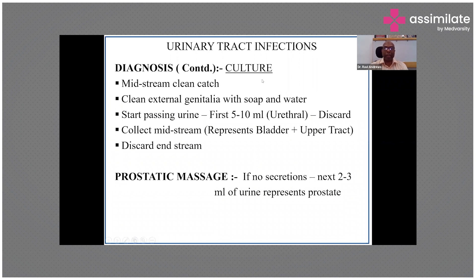If suprapubic or catheter collection isn't available, a midstream clean catch is used. In males, the external genitalia are cleaned, the first 5–10 mL of urine — contaminated by skin bacteria like Staph. epidermidis and saprophyticus — is discarded, and the midstream sample is collected representing the bladder and upper tract. For females, the best method is to sit on the toilet facing the other way, clean the labia with soap and water, and collect midstream.